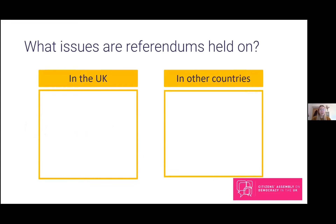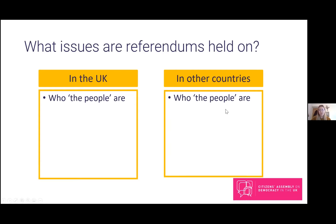Referendums can be held on a range of topics. The first is who the people are. Democracy is ultimately about power of the people, and a referendum is often used to work out who the people are. In the UK we've had the referendum on Scottish independence, and independence referendums have been held in other countries, for example in Quebec in Canada and Catalonia in Spain.